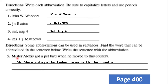The word is 'Mr.' — it can be abbreviated. Written as capital M, R, dot. So the sentence reads: 'Mr. Alex got a pet bird when he moved to this country.' Only the word Mr. is abbreviated, written as capital M, R, dot.